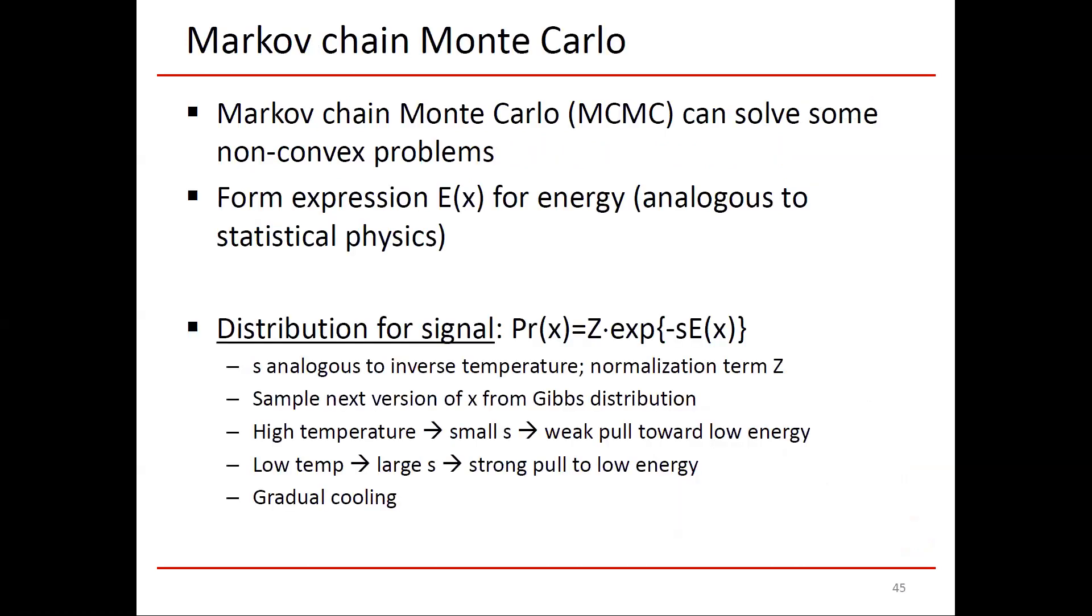A possible way to solve that, with pros and cons as usual, is Markov chain Monte Carlo, often called MCMC. It can be used to solve some non-convex problems. The main idea is that you have an expression E of X for the energy that corresponds to a possible solution X. This energy is analogous to a statistical physics problem.